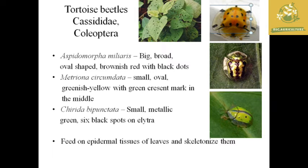The next pest is the tortoise beetle, which comes under the family Cassidinae and order Coleoptera. The species are Aspidomorpha milliaris, Metriona circumdata, and Chirida bipunctata. Aspidomorpha milliaris has a big, broad, oval-shaped brownish-red body with black dots. The Metriona species is small, oval, and greenish. The Chirida species is a small metallic green with six black spots on its elytra. These beetles feed on the epidermal tissue of the leaves and skeletonize them.